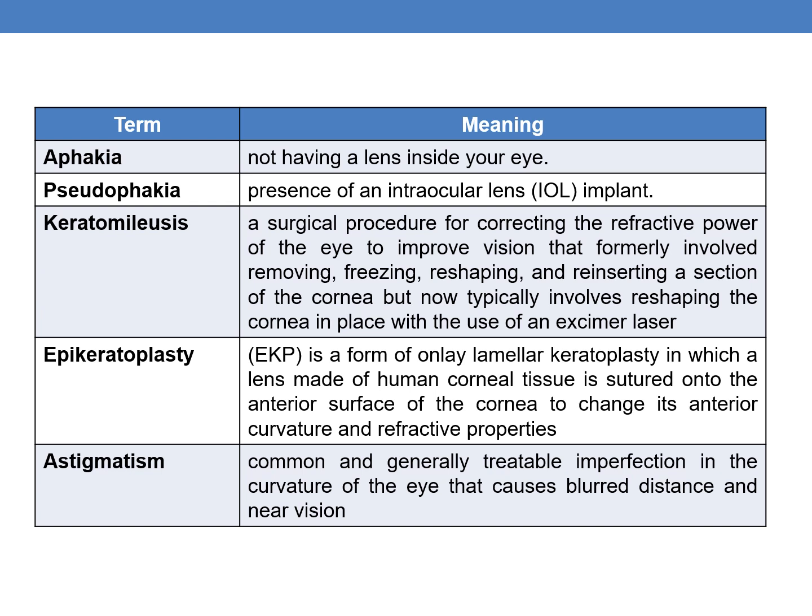The next term is keratomileusis. It is a surgical procedure for correcting the refractive power of the eye to improve vision that formerly involved removing, freezing, reshaping, and reinserting a section of cornea, but now typically involves the reshaping of the cornea in place with the use of an excimer laser.